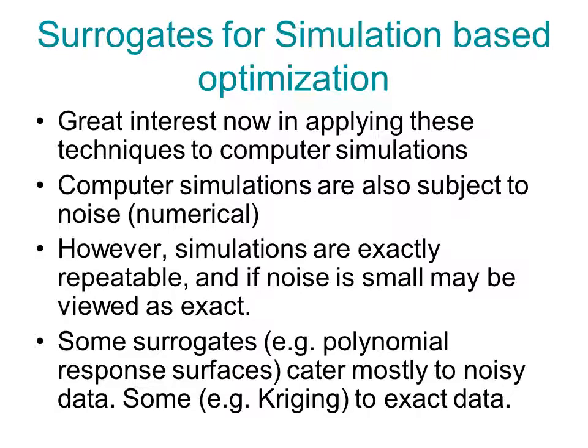However, there are simulations that you conduct with very little error, and then they can be viewed as exact. So we have surrogates such as polynomial response surfaces that cater mostly to noisy data, and some that we will also study in this course, such as kriging, that cater mostly to exact data.